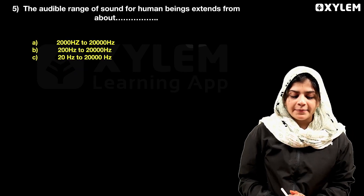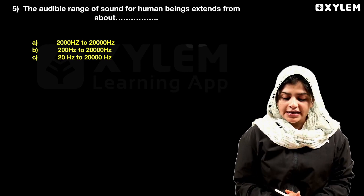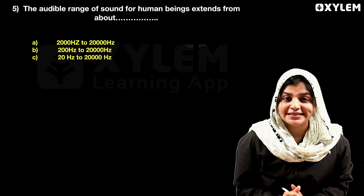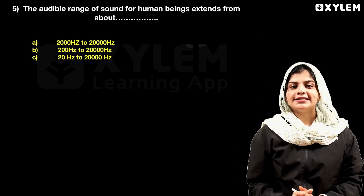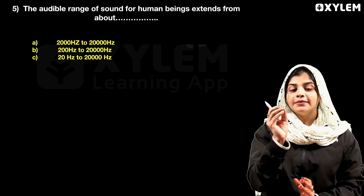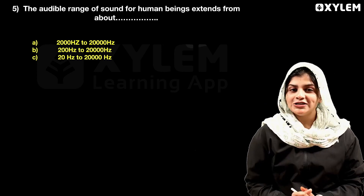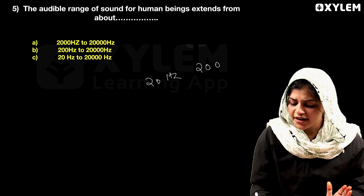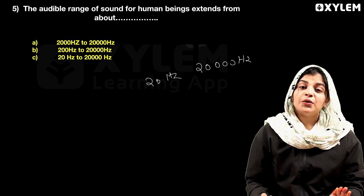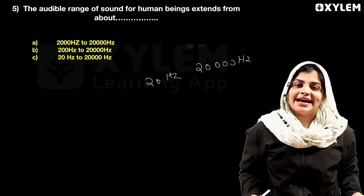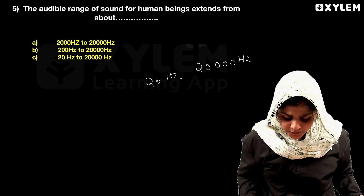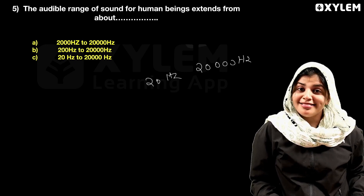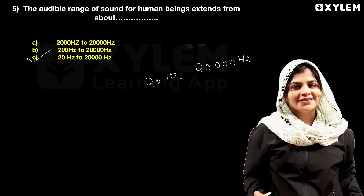We have a fifth question. The audible range of sound for human beings — you can show the range of frequency for human beings. It extends from 20 Hz to 20,000 Hz, that is 20 Hz to 20 kilohertz.